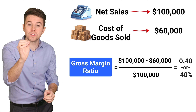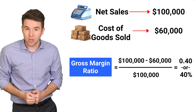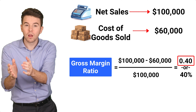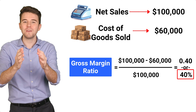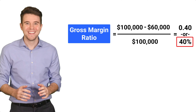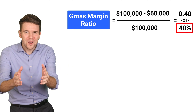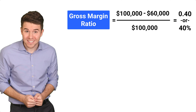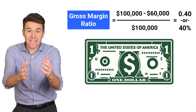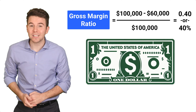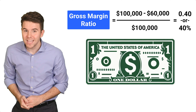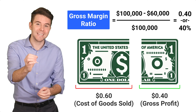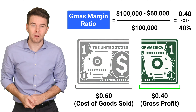This gives us a gross margin ratio of 0.4 or 40%. So what does the 40% gross margin ratio tell us? It means that for every dollar in sales, the company kept 40 cents as gross profit.